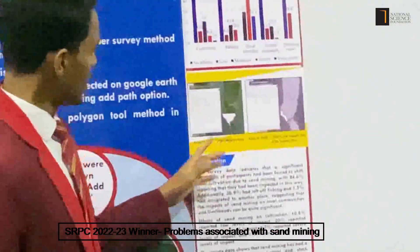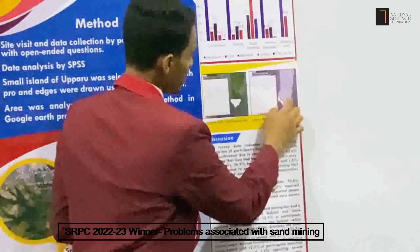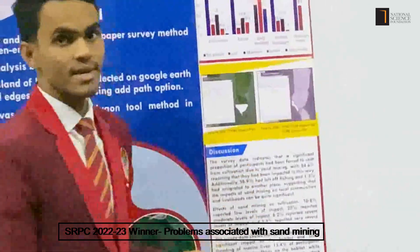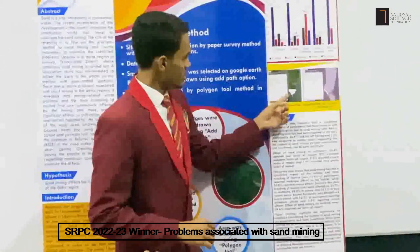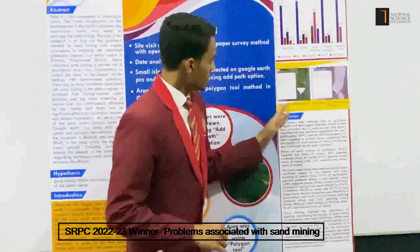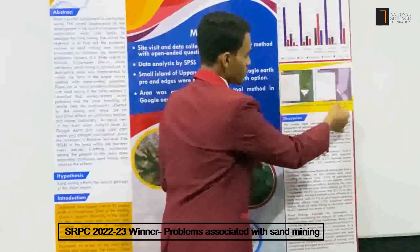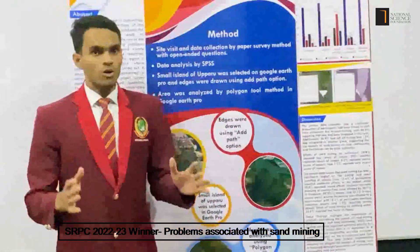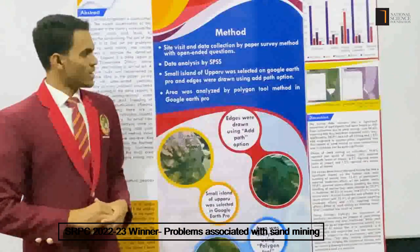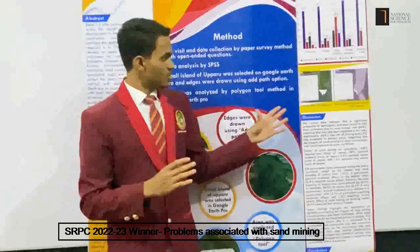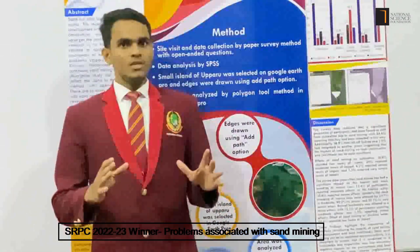I have taken two areas from two different time periods. In 2008, the area of this region was 4,786 square meters. But this is the same area in 2022 — the area was 3,542 square meters. So we can see that 1,240 square meters are lost by the sand mining of that particular island in Upari Delta Region. If the mining continues for a long-term period, it will surely be affected.